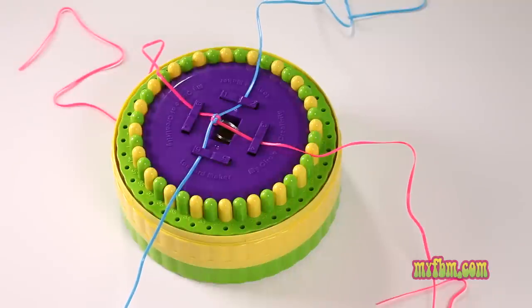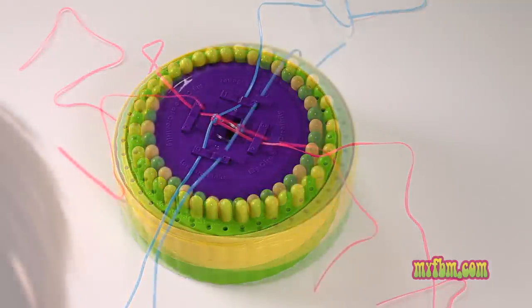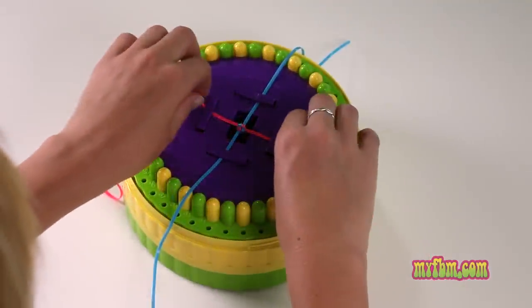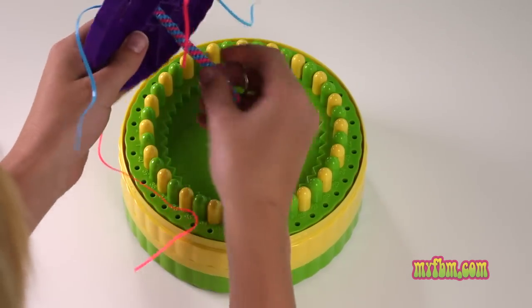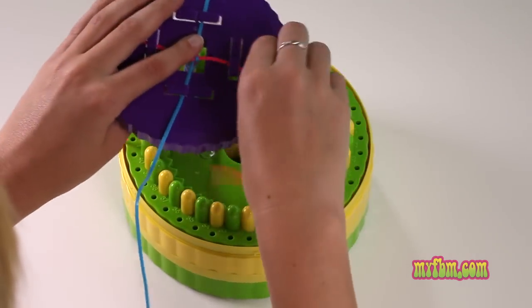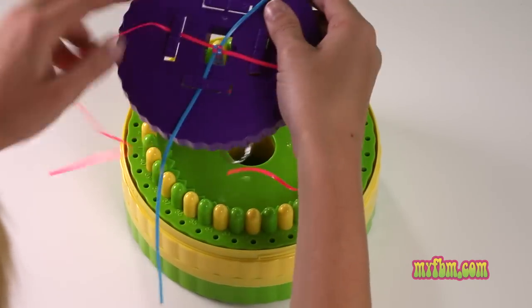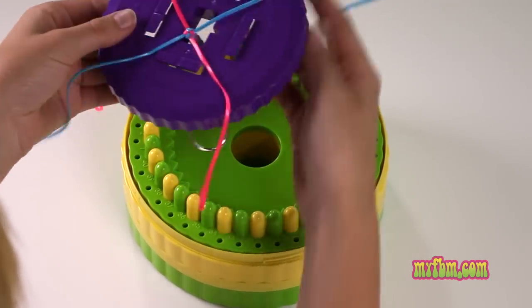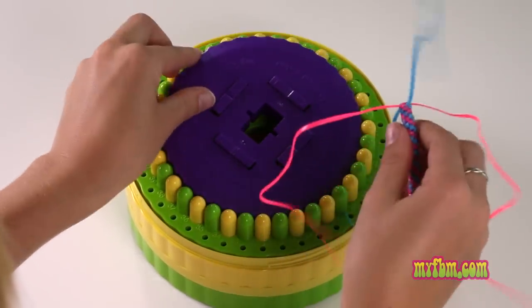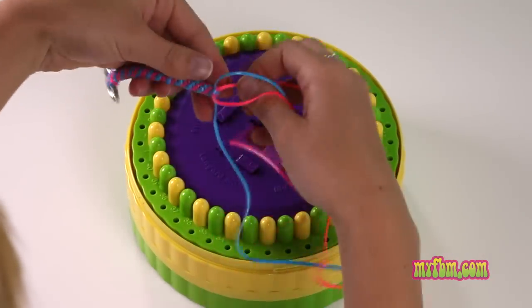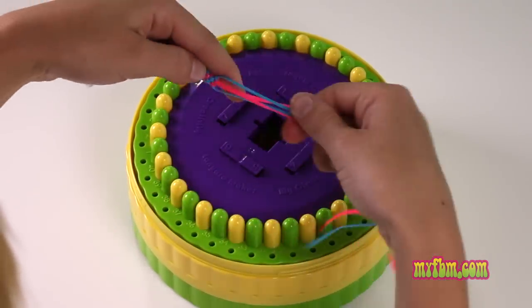Repeat this pattern and watch your lanyard grow. At any time, you can pick up your lanyard maker and check the length of your lanyard. When it's long enough, remove the strings from the holders and pull it through. You can end your lanyard with a knot or with beads.